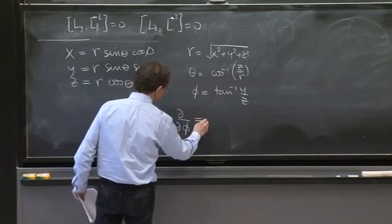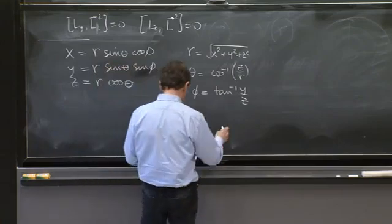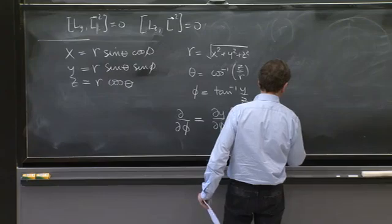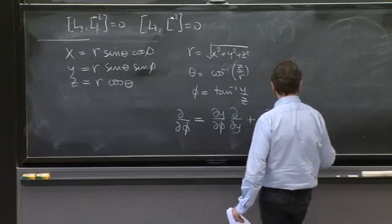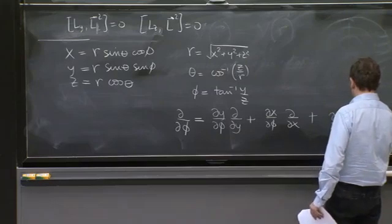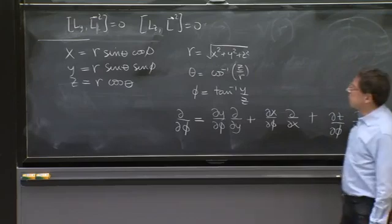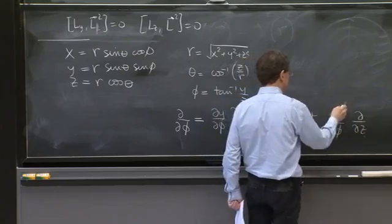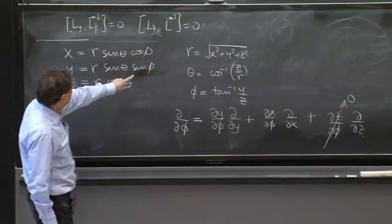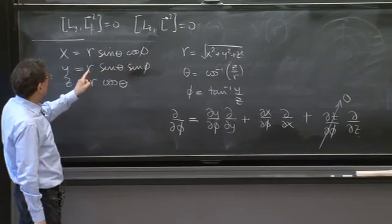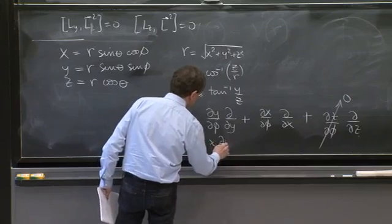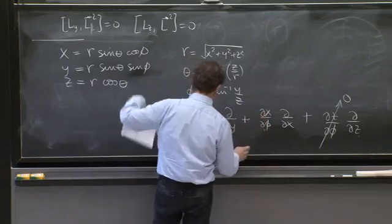So maybe we can have some luck and understand what is d d phi, the d phi operator. Well, the d phi operator is d dy d phi plus d dx dx d phi, rules of chain rule for partial derivatives, plus d d d z d phi. But z doesn't depend on phi. On the other hand, dy d phi is what? dy d phi, this becomes a cos phi, it's x, x d d y.